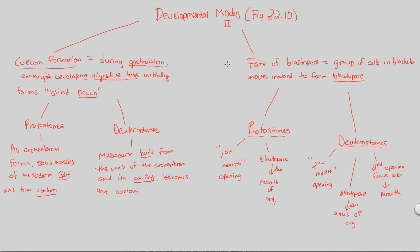Key thing to remember: all of these developmental modes apply to bilaterally symmetric organisms, because only bilateria contains protostomes and deuterostomes. Thus, only bilateria will undergo the fate of the blastopore, coelom formation, and cleavage patterns. We'll be focusing a lot on bilateria going forward in animal diversity.